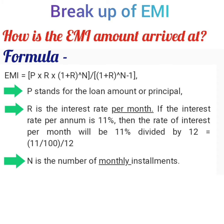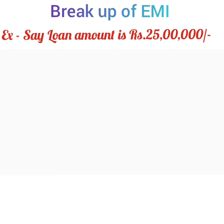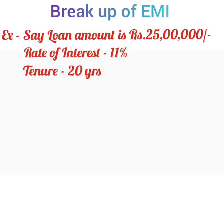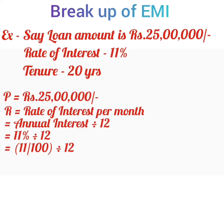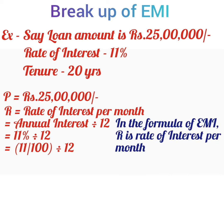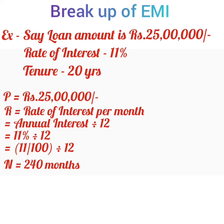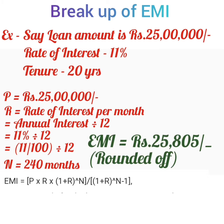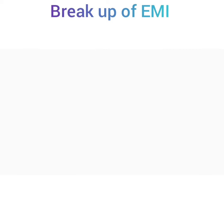For example, let's assume the loan amount is Rs 25 lakh, the rate of interest is 11% per annum, and the tenure of the loan is 20 years. So P equals Rs 25 lakhs, R equals 11% divided by 12 (rate of interest per month), and N equals 240 months, since 20 years means 240 months. Applying the formula, the EMI comes to Rs 25,805 rounded off.